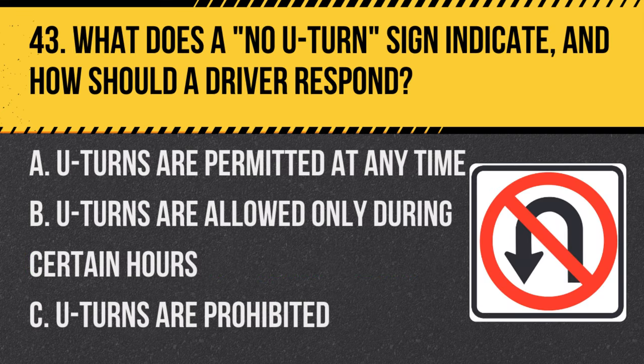Question 43. What does a no U-turn sign indicate, and how should a driver respond? A. U-turns are permitted at any time. B. U-turns are allowed only during certain hours. C. U-turns are prohibited. Answer: C. U-turns are prohibited. When a no U-turn sign is present, drivers must not make U-turns.